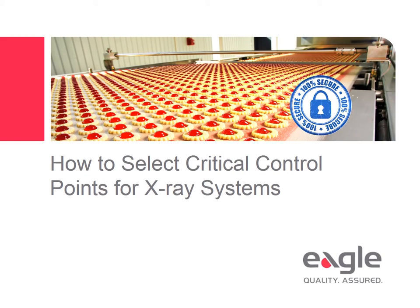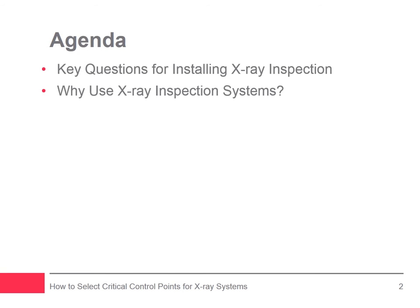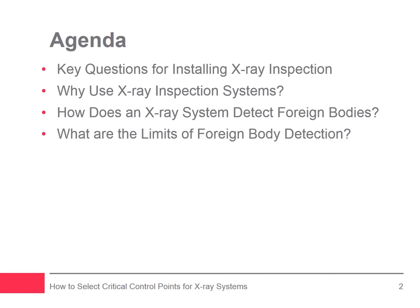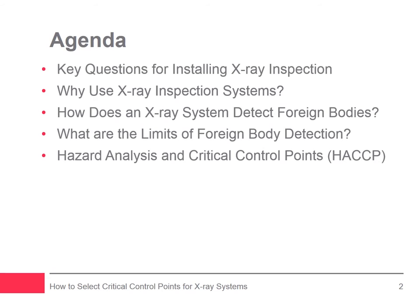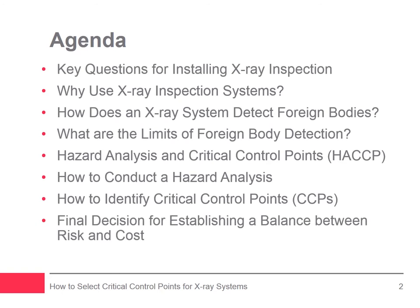This webinar explains how to select critical control points for x-ray inspection systems. The webinar covers the following topics: key questions for installing x-ray inspection, why use x-ray inspection systems, how does an x-ray system detect foreign bodies, what are the limits of foreign body detection, hazard analysis and critical control points, how to conduct a hazard analysis, how to identify critical control points, and the final decision for establishing a balance between risk and cost.